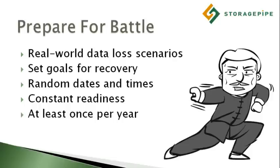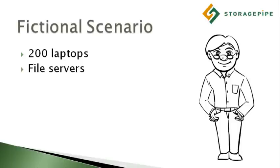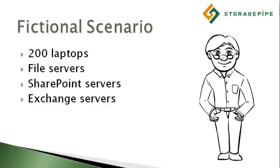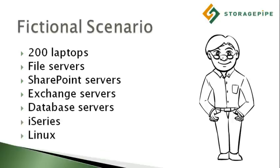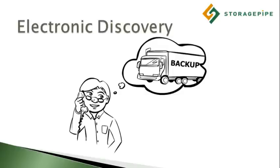In this video, we'll walk you through a data loss scenario for a fictional pharmaceutical company called Acme. Roger is the IT manager for Acme, where he's in charge of over 200 laptops and desktops and dozens of servers. Within their data center, they have Windows file servers, Exchange servers, SQL servers with SharePoint, Linux servers, iSeries servers, and a number of other machines. This data center is also laid out as a mixture of virtual and physical machines, further complicating the data protection process.